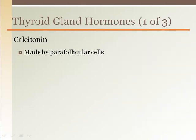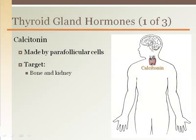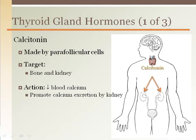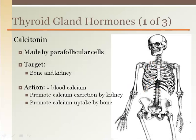Calcitonin targets the bones of the skeletal system and the kidneys for calcium regulation. The role of calcitonin is to lower blood calcium levels. It targets the kidney tubules to excrete more calcium out in the urine and targets the bones to take up more calcium for storage. High blood calcium levels, not the pituitary gland, initiate the release of calcitonin from the thyroid gland.